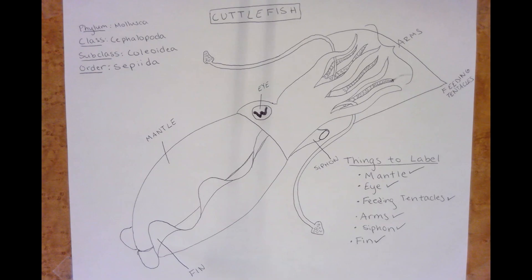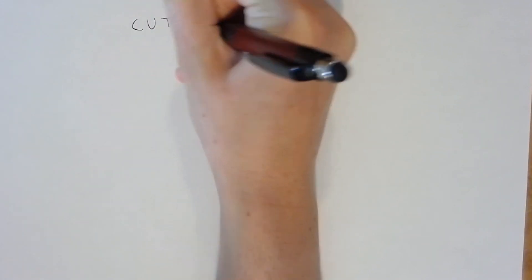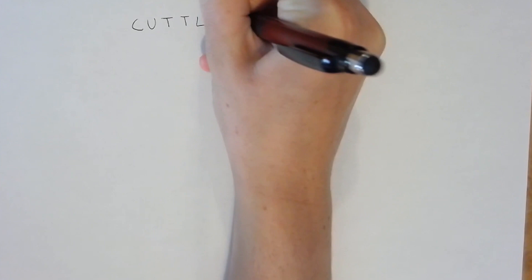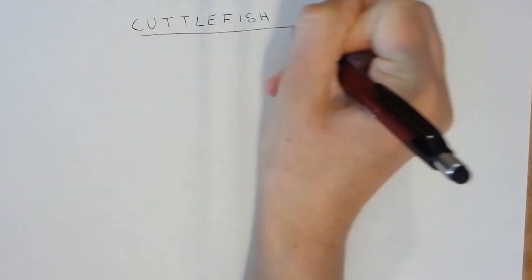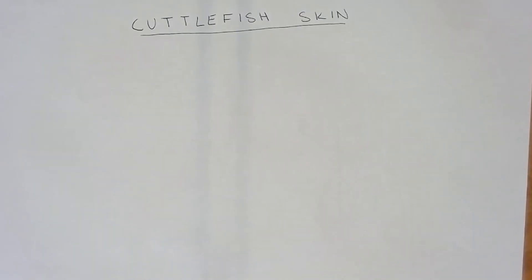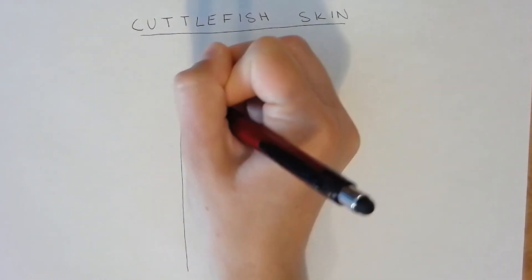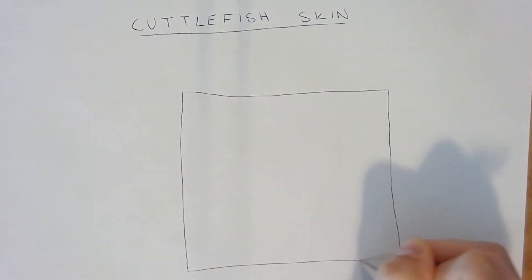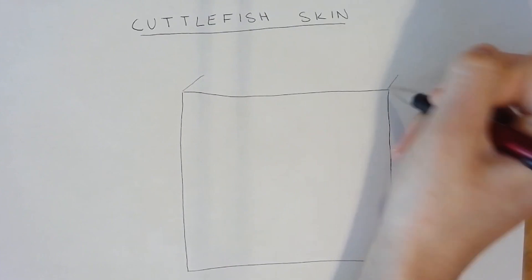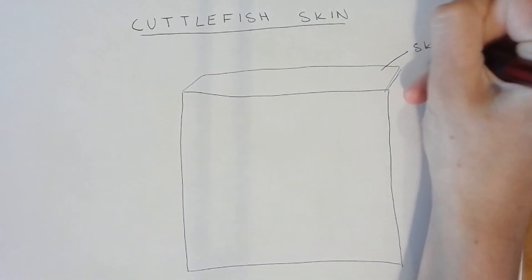Now that we've finished labeling our general cuttlefish anatomy, we are going to draw a more detailed diagram of the skin layers which enable cuttlefish to change their appearance. Cuttlefish have three main skin layers which facilitate their color and pattern change.